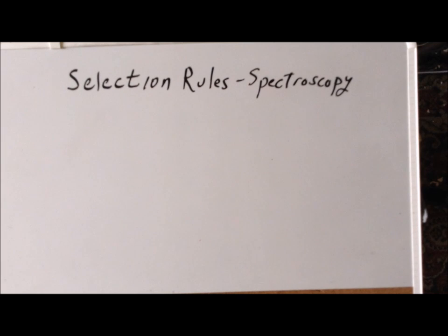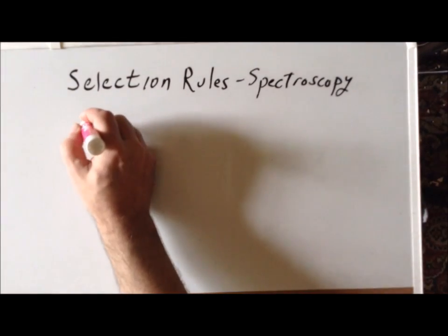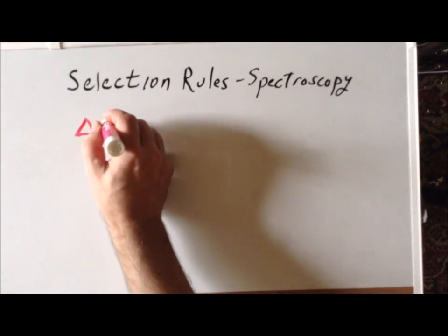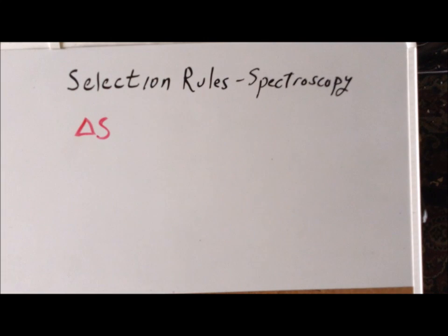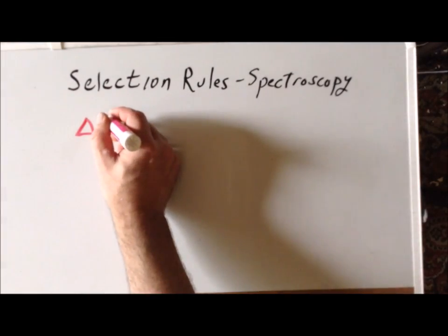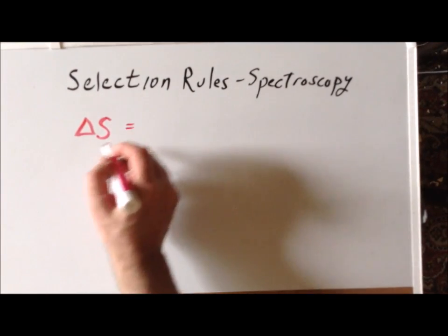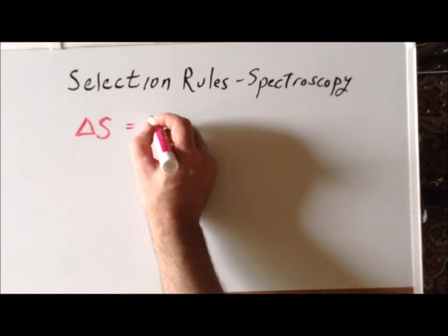Now for the selection rules for polyelectronic systems. We're going to write these in pink here. So delta—and here, when we have more than one electron, the quantum number is going to be written as a capital Roman letter. So here again, the same reasons we had for the single electron case, delta big S is going to be equal to zero.